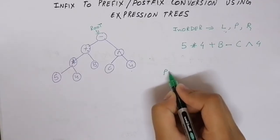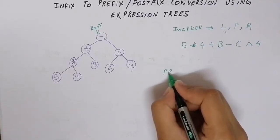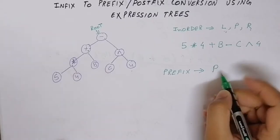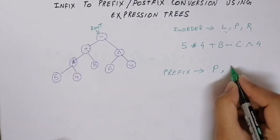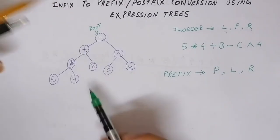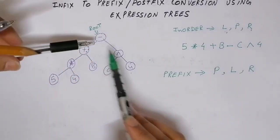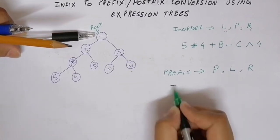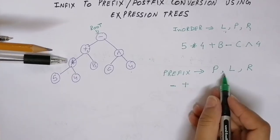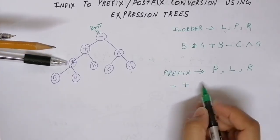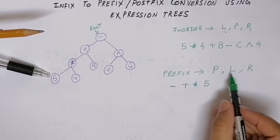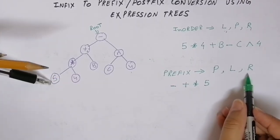To convert the same expression to prefix notation, we first print the value of the current node, then move towards the left subtree, then visit the right subtree. Starting from the root, we print minus first, then call the left subtree plus. Plus prints itself and calls its left subtree multiply. Multiply prints itself and calls its left subtree 5. Five prints itself, then calls left and right subtrees which are null.